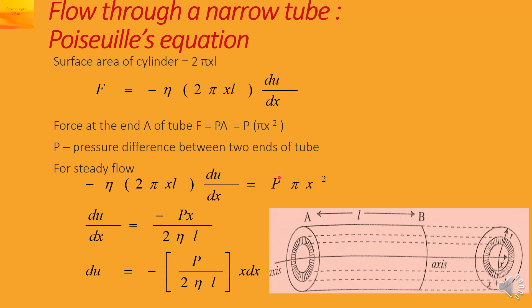Pi cancels out and x cancels out. Rearranging the equation gives du by dx equal to minus P x upon 2 eta L.